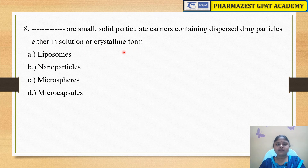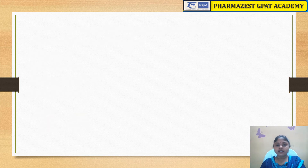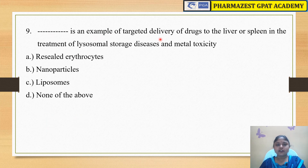The next question is: dash are small solid particulate carriers containing dispersed drug particles either in solution or crystalline form. The options are A) liposomes, B) nanoparticles, C) microspheres, and D) microcapsules. The right answer is microspheres. Microspheres are small solid particulate carriers which contain dispersed drug particles either in solution or crystalline form.